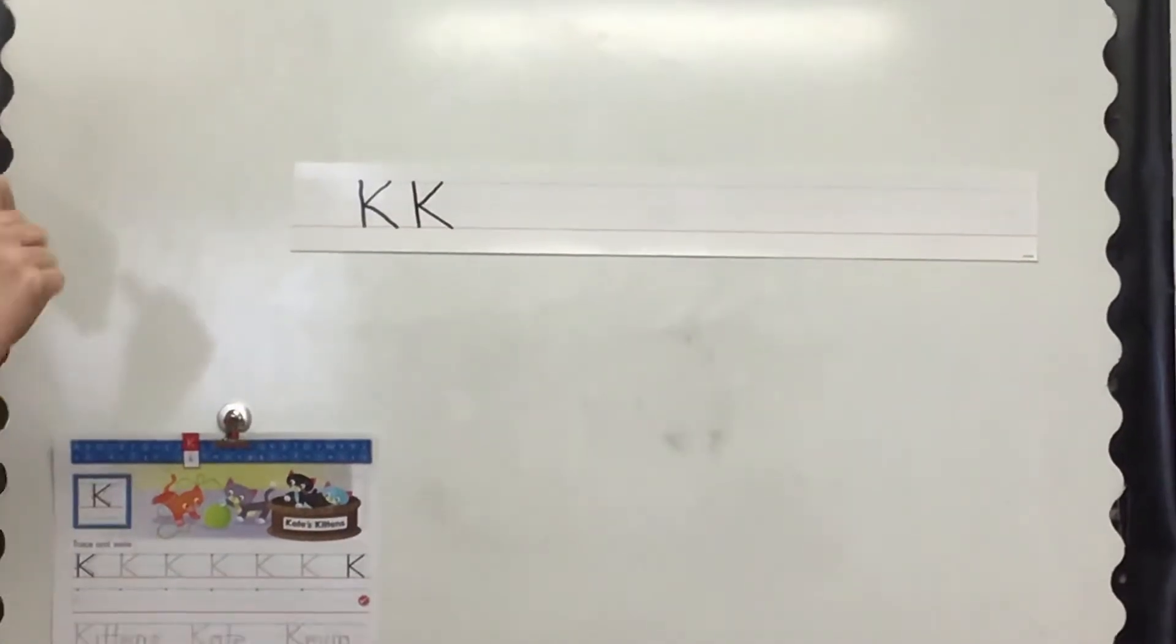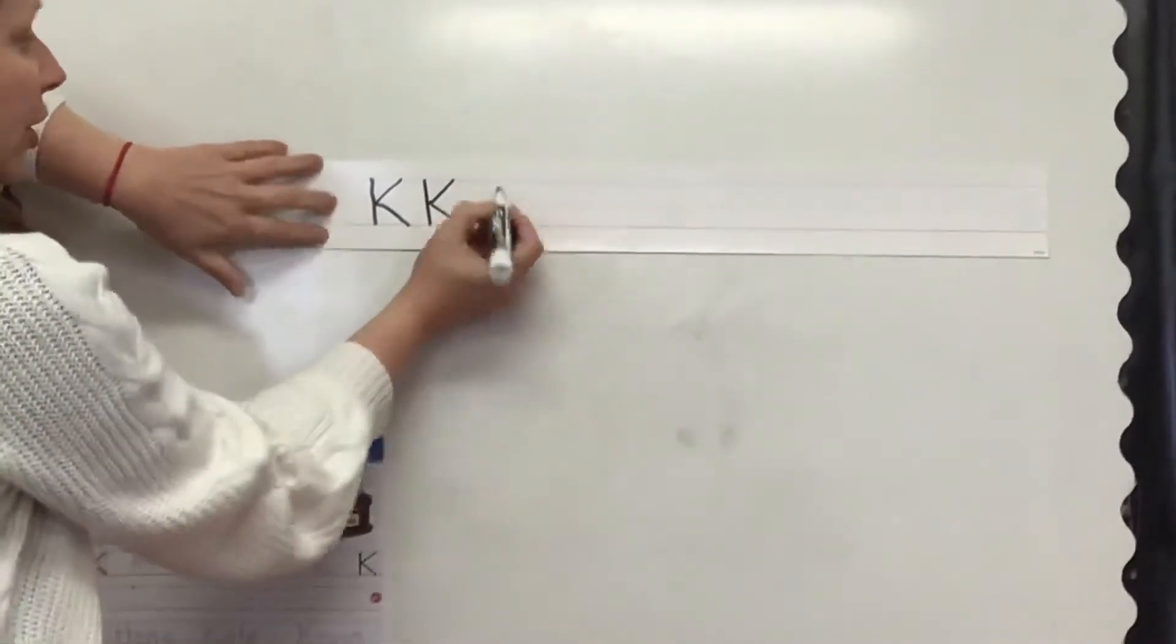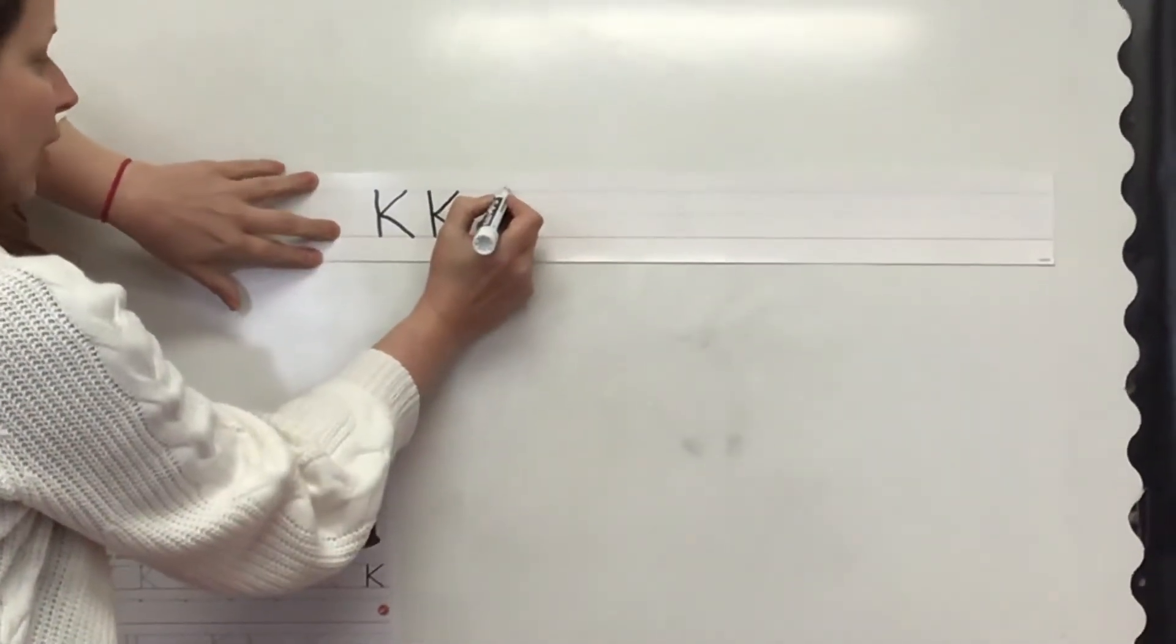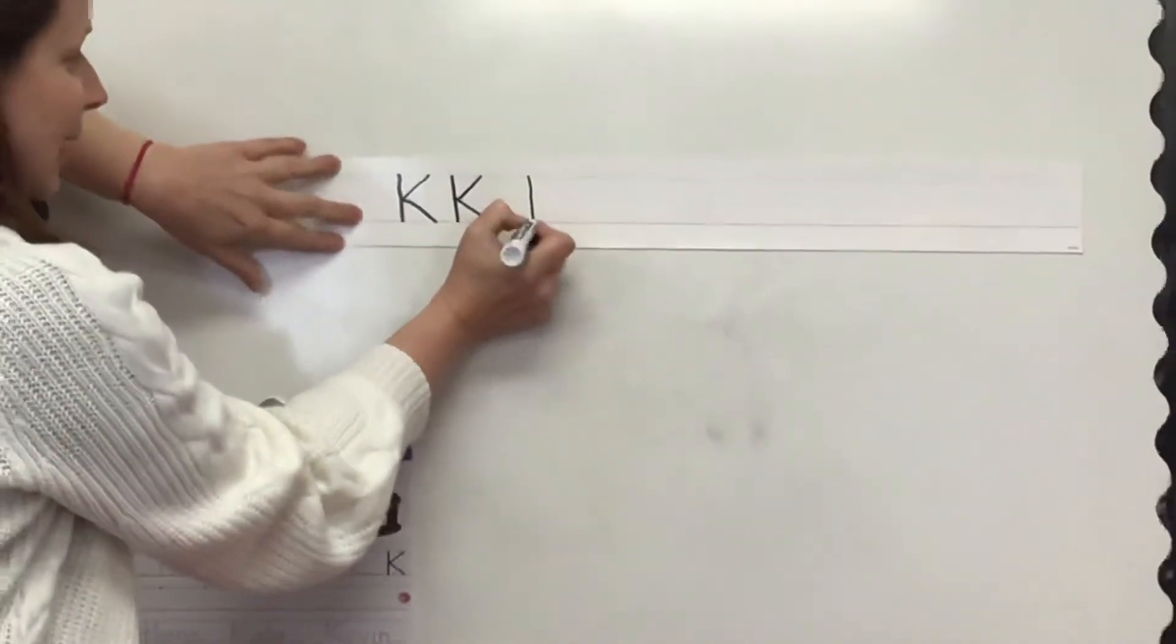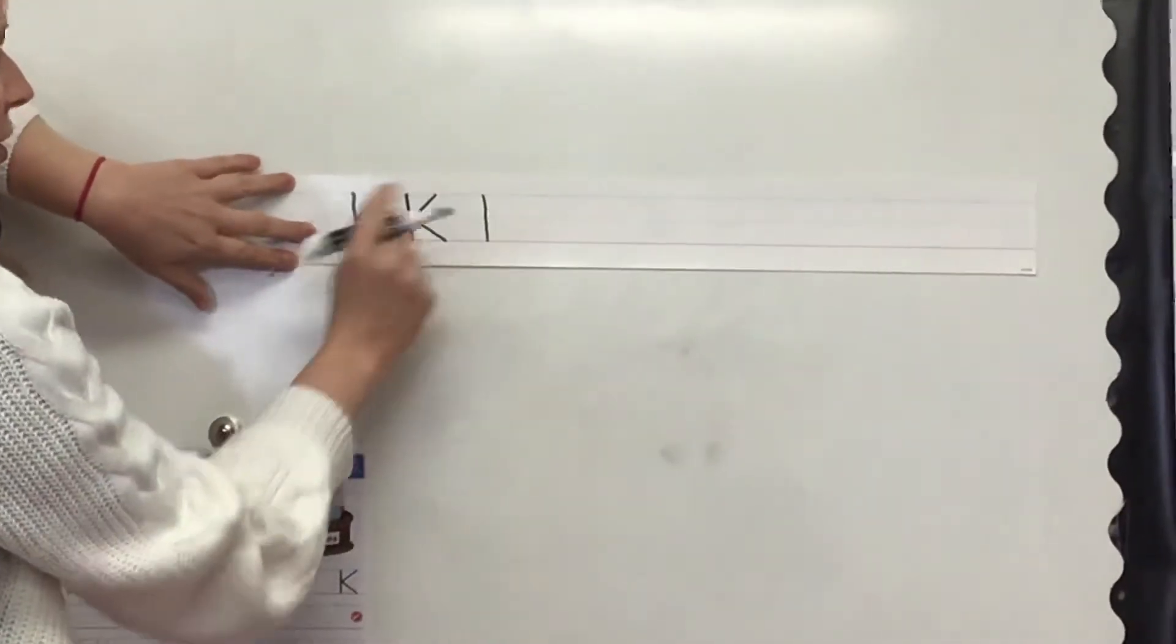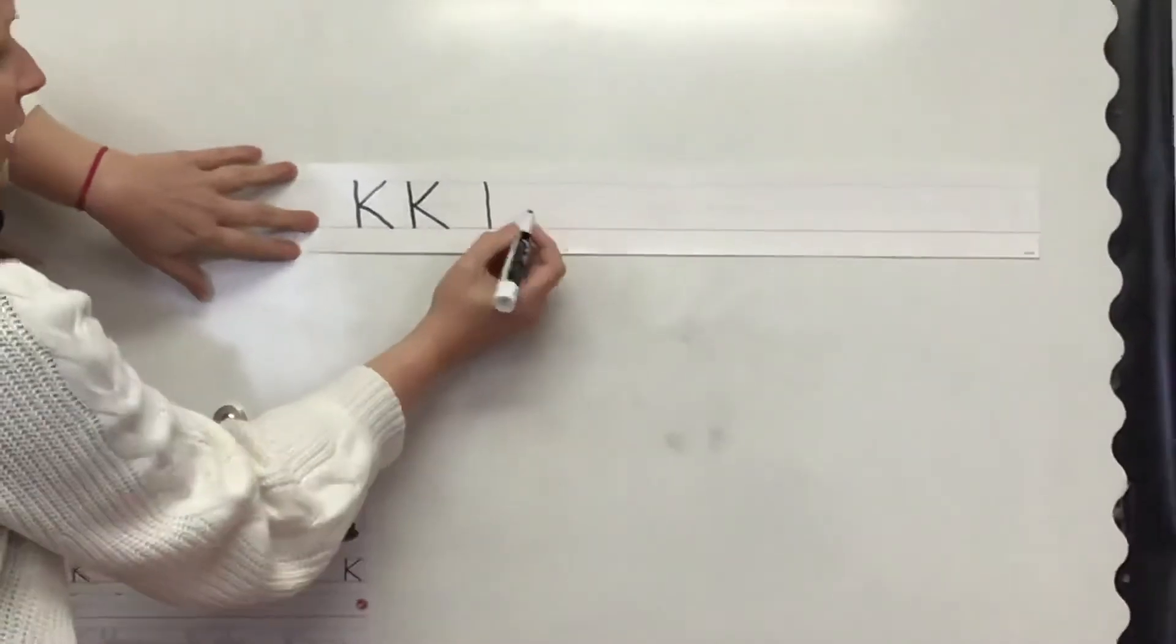Our lowercase K looks almost the same, and it is tall as well. So a nice tall plop, but the whee does not start at the top, it starts in the middle.